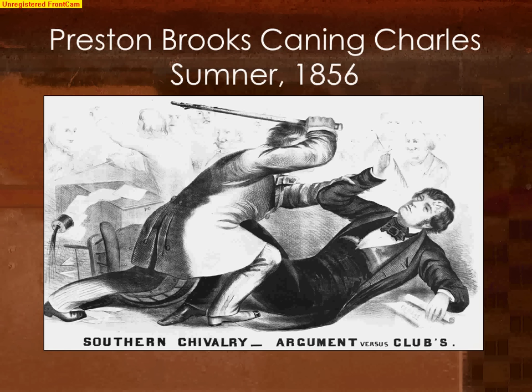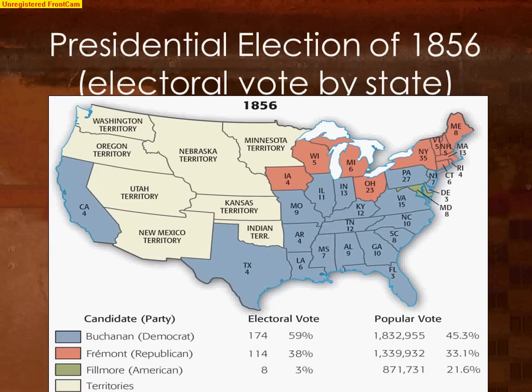Here is a depiction of Brooks attacking Sumner. And here is the electoral map for 1856 when James Buchanan won.